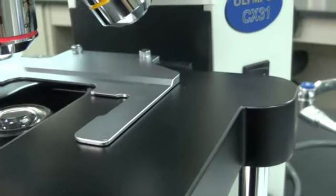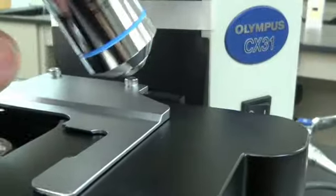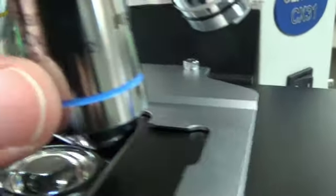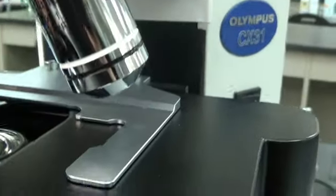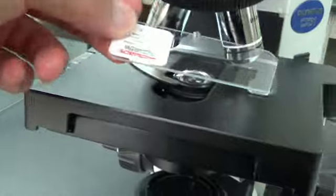These are the oculars. Looks like this one here is a 4. This yellow one here is a 10. This one's a 40. This one is an oil 100. Now I have a slide. I'm going to look at it under the microscope.